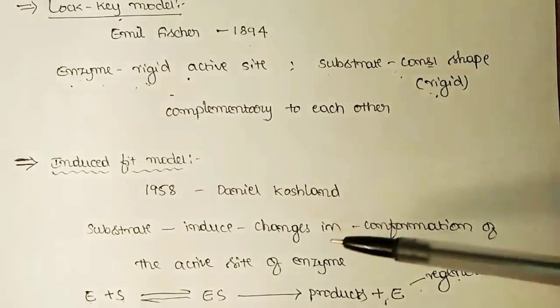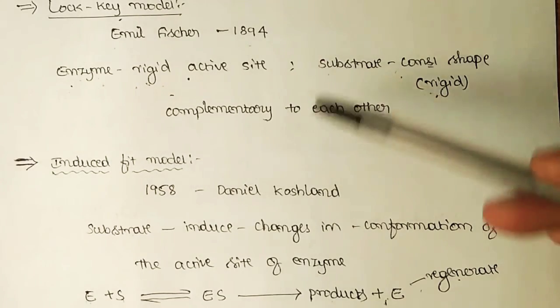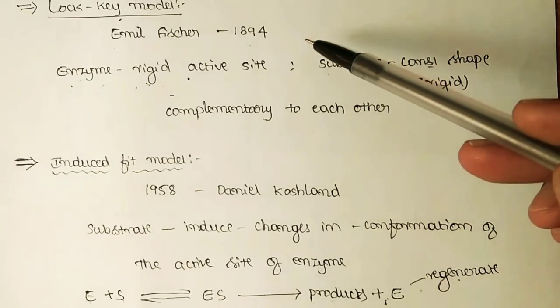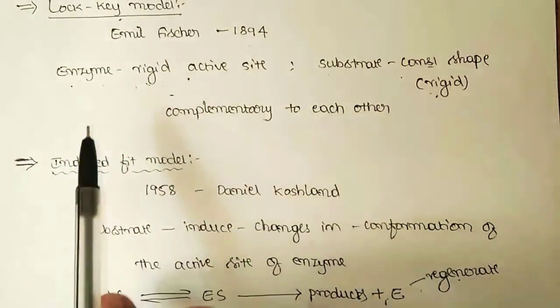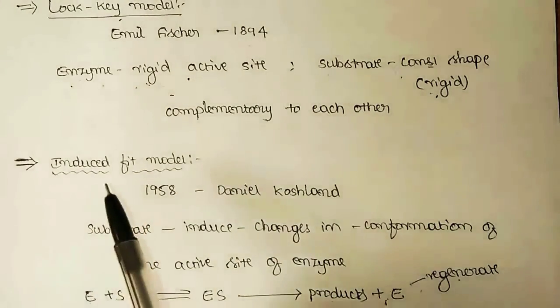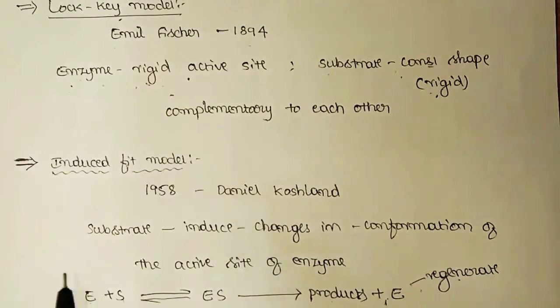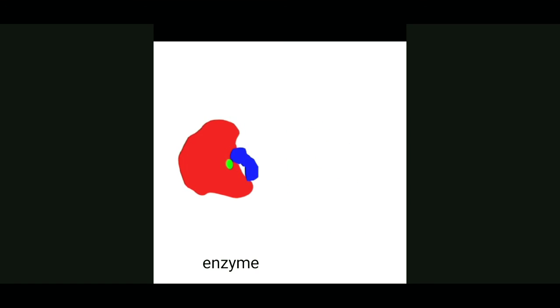This is the difference between the lock and key model and the induced fit model. Based on these two theories we can explain the complete mechanistic pathway of how the interaction takes place between enzyme and substrate in developing the products. When an enzyme of a particular conformation is approached by the substrate, the substrate induces a change in the conformation of the enzyme at its active site complementary to it, forming the enzyme-substrate complex, in which the enzyme modifies the substrate by breaking or forming bonds so as to produce the products.